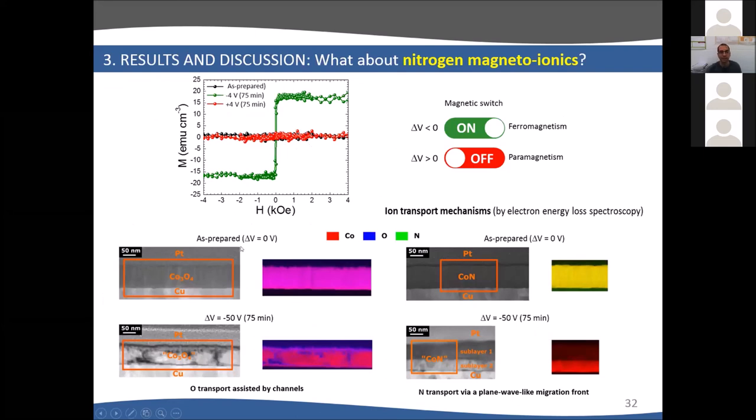We can also do this on-off transition with cobalt nitride. There is a difference in the way diffusion takes place. In cobalt oxide, it's inhomogeneous and you form vertical channels of regions enriched in cobalt. For cobalt nitride, you have a planar front which propagates parallel to the surface. The nitrogen forms like a buried layer. You start with cobalt nitride and form a cobalt-rich layer, then a cobalt-depleted layer on top. You have a planar front which we think can be interesting to control in a layered system, these magneto-ionic profiles.